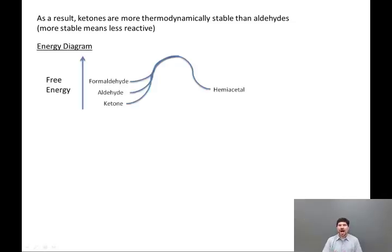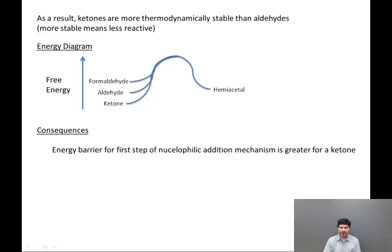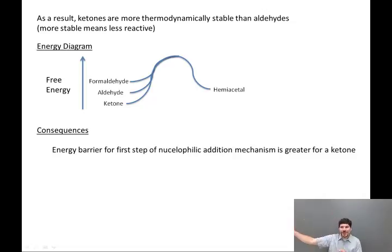We can look at this on an energy diagram. Formaldehyde — the aldehyde with two hydrogens — is higher in energy than an ordinary aldehyde, which is higher in energy than a ketone. The hemiacetal has approximately the same energy. You can see that the energy barrier for the first step of the nucleophilic addition mechanism — you have to get up over that hump — is greater for a ketone than it is for an aldehyde.